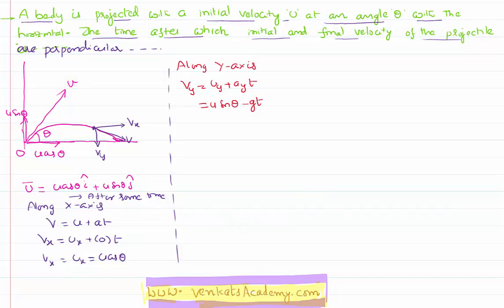So, if I have to write what is the velocity after some time, that implies velocity v bar could be expressed as vx i bar and vy j bar. vx is nothing but ux. That is u cos theta i cap. uy is nothing but u sin theta minus gt j cap. Now, I would like to calculate after what time these two velocities are perpendicular to each other.